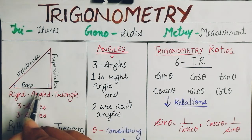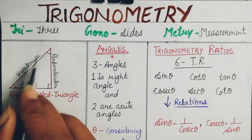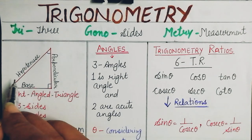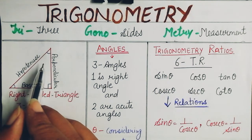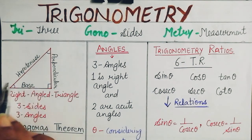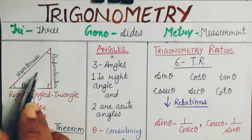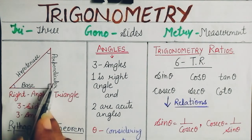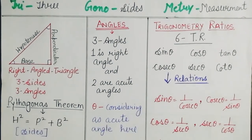If the total is 180 degrees and one angle is a right angle, that is 90 degrees, then the other two angles must sum to the remaining 90 degrees. When you partition 90 degrees into two parts, those become acute angles. So a right angle triangle has one angle of 90 degrees and the other two are acute angles. These are base, perpendicular, and hypotenuse.